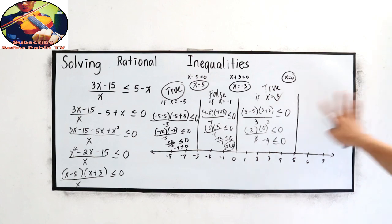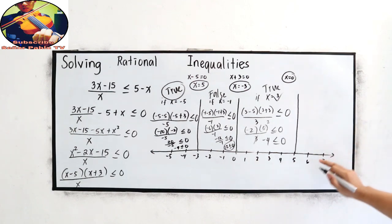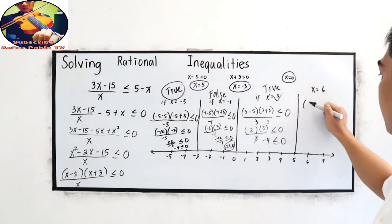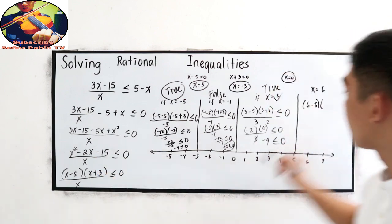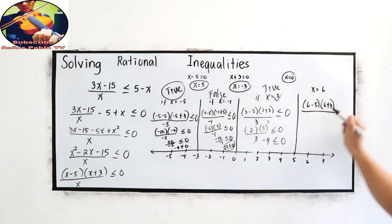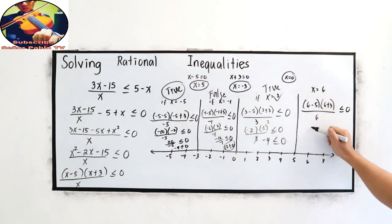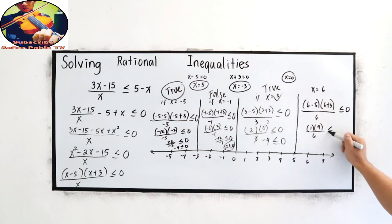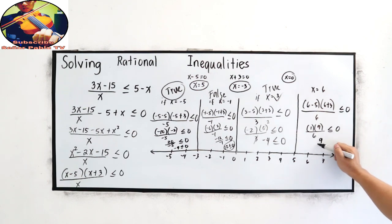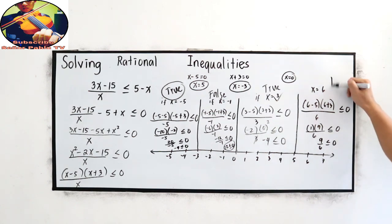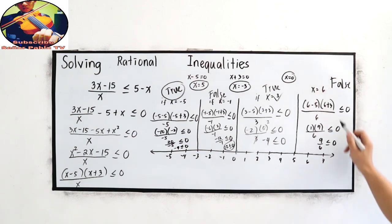Last, let us test numbers greater than 5. We choose x equals 6. Substituting: (6 minus 5)(6 plus 3) over 6. That gives 1 times 9 over 6, which is 9 over 6 — approximately 1.5 — which is greater than zero. This is false. So let us cross out the false regions.